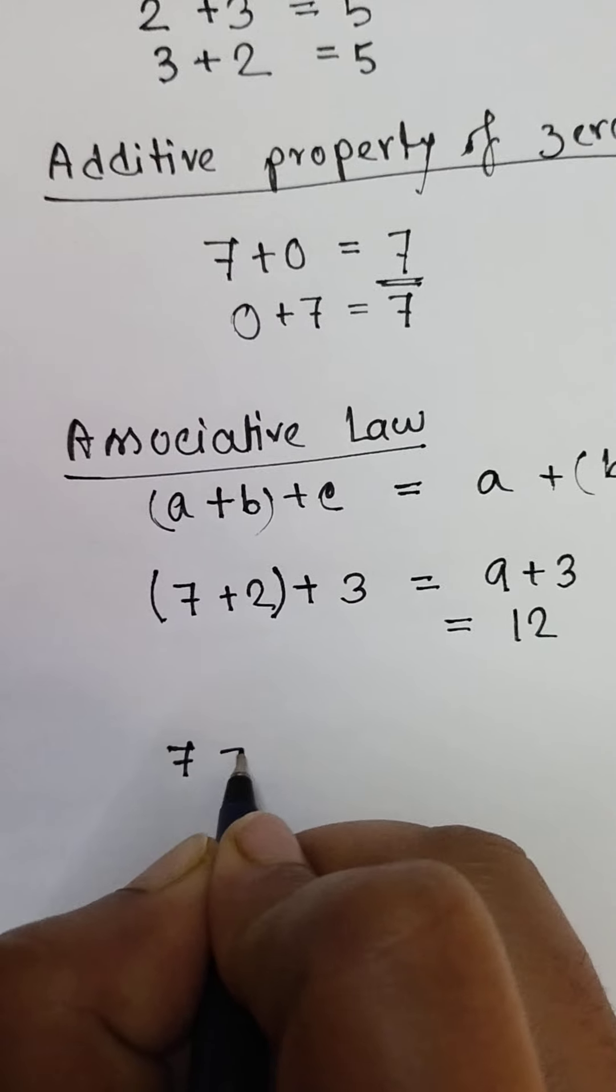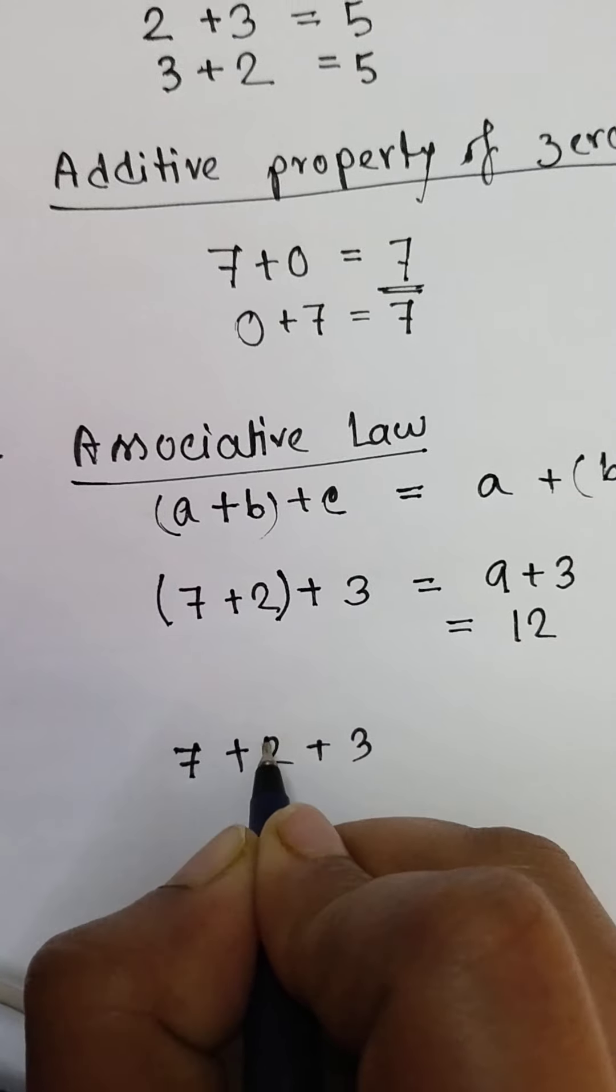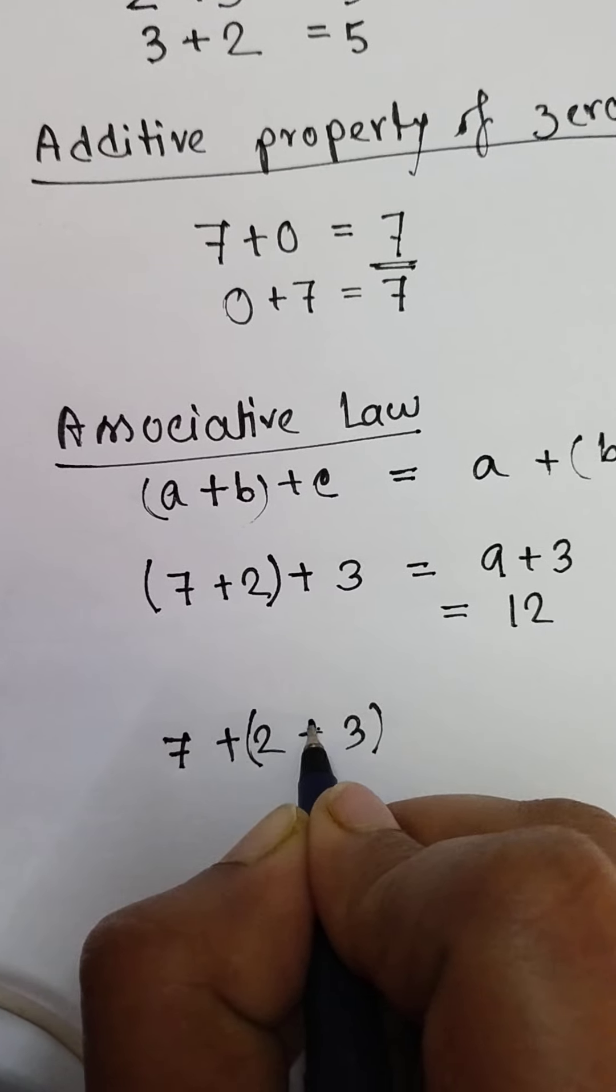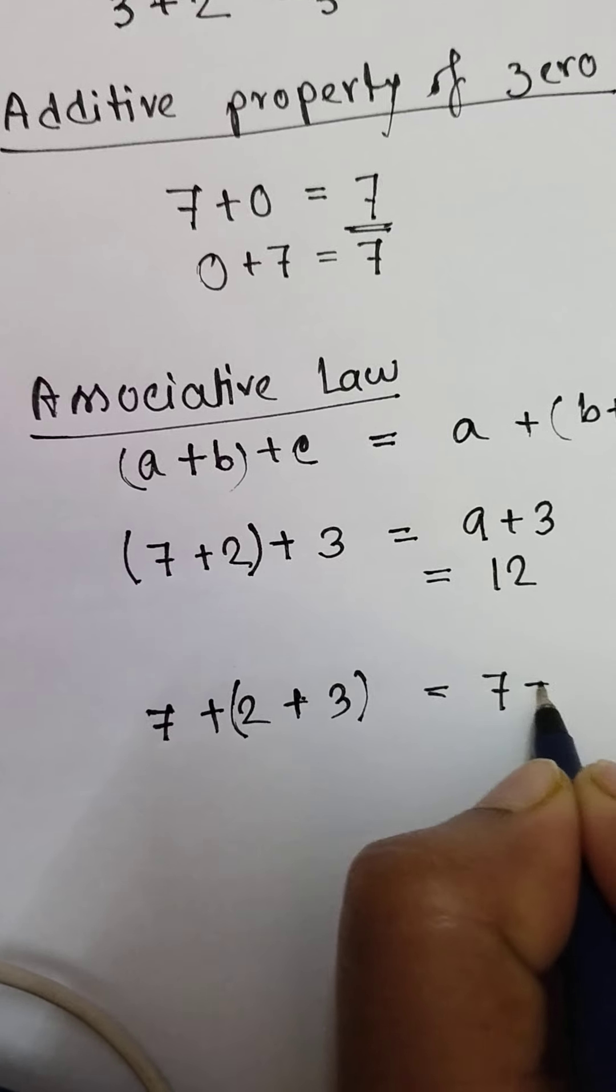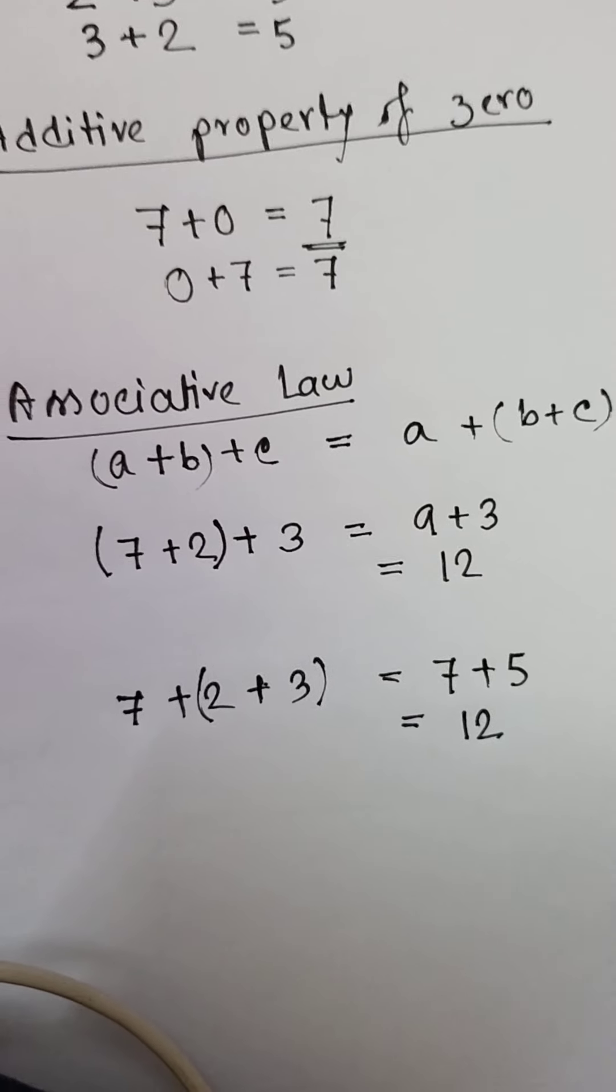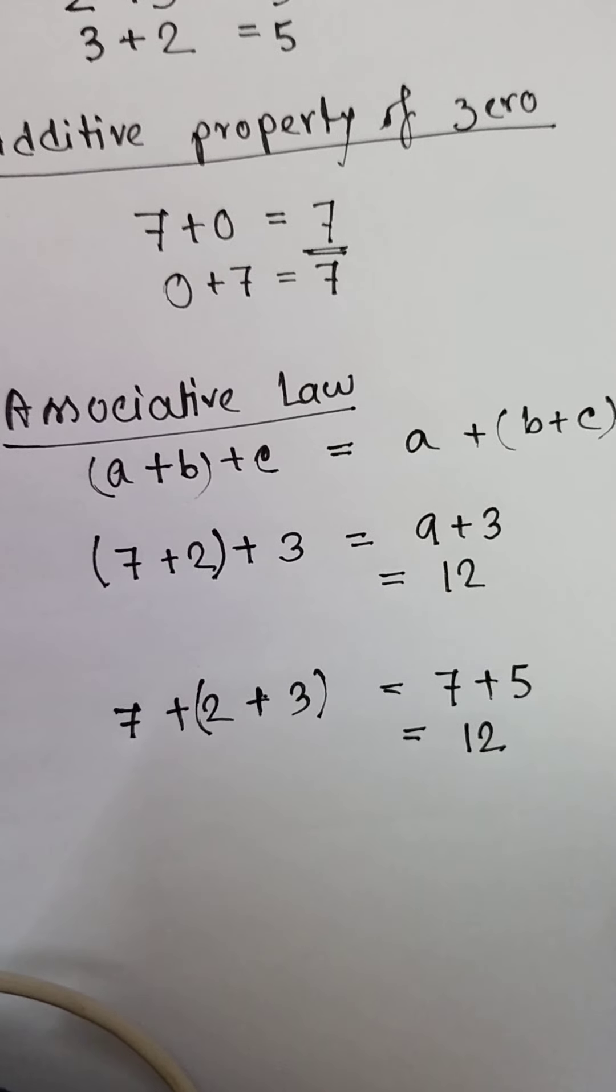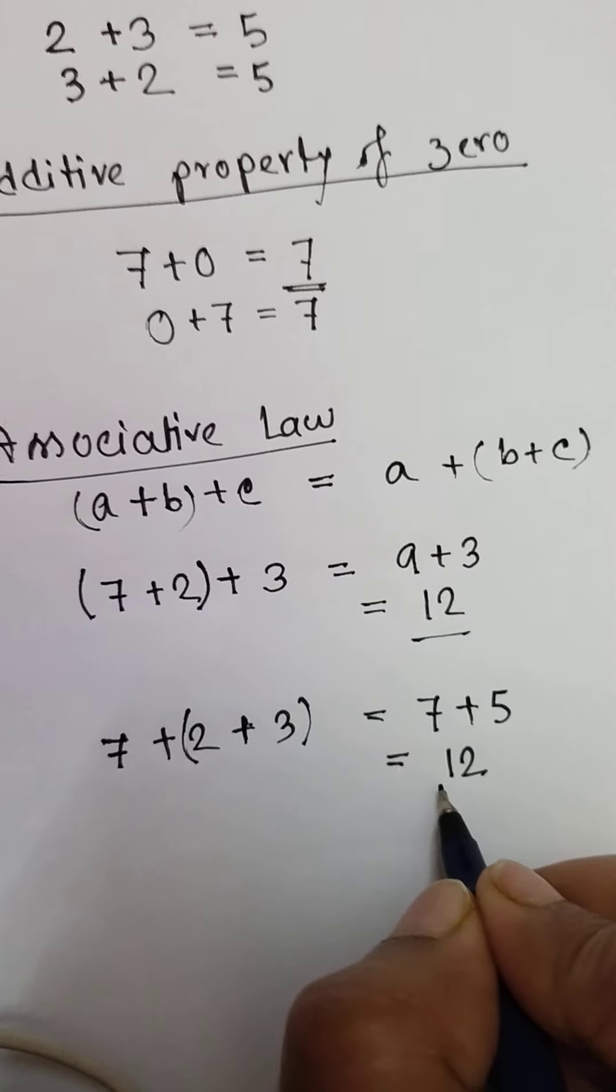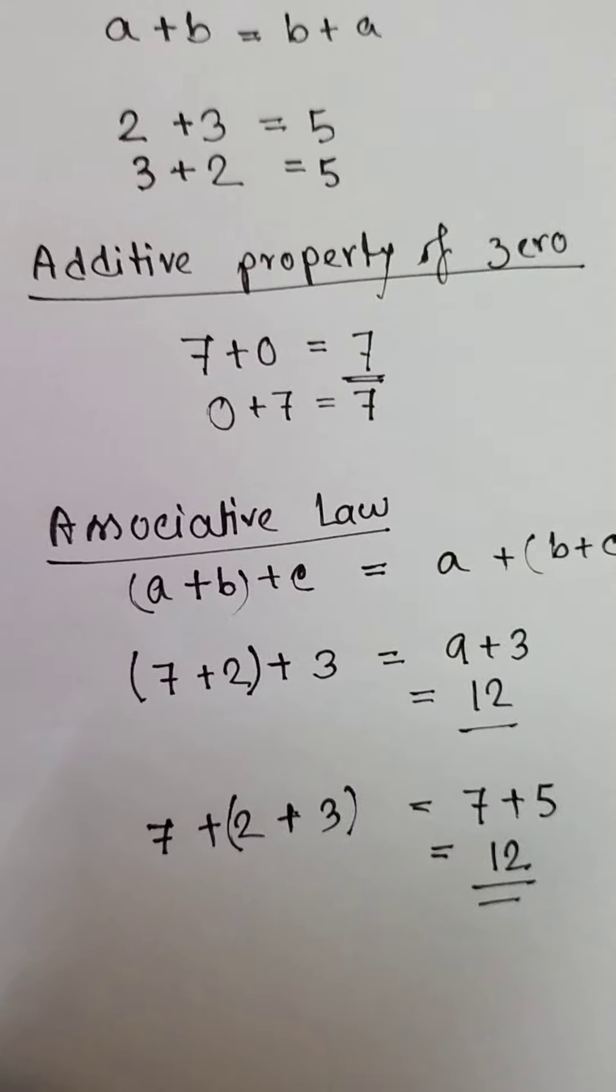Now if we write it like 7 plus 2 plus 3 and we put bracket like that, then we will get 7 plus 5 which is also 12. So the results remain the same. This is called the associative law.